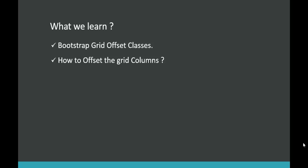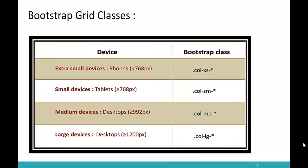Let us recall what we learned in the previous session. The Bootstrap grid system provides 12 columns, and using those 12 columns we design layouts for web pages. Bootstrap also includes several grid classes to create layouts for different devices like phones, tablets, desktops, and larger devices — and using these grid classes we can target different screen sizes.